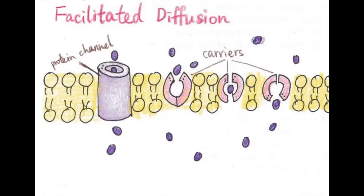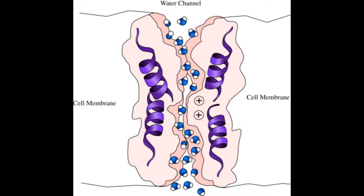Facilitated diffusion is the diffusion in which a carrier molecule transports a substance across a cell membrane from a region of higher to lower concentration. Aquaporins are integral proteins that allow the transport of water between cells across a phospholipid bilayer.